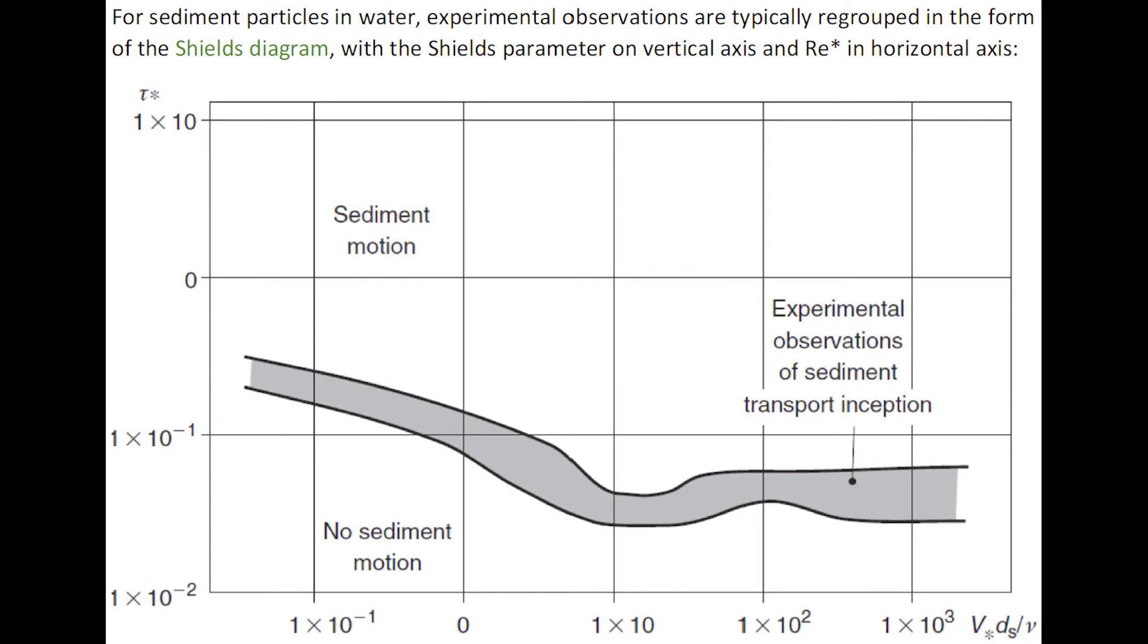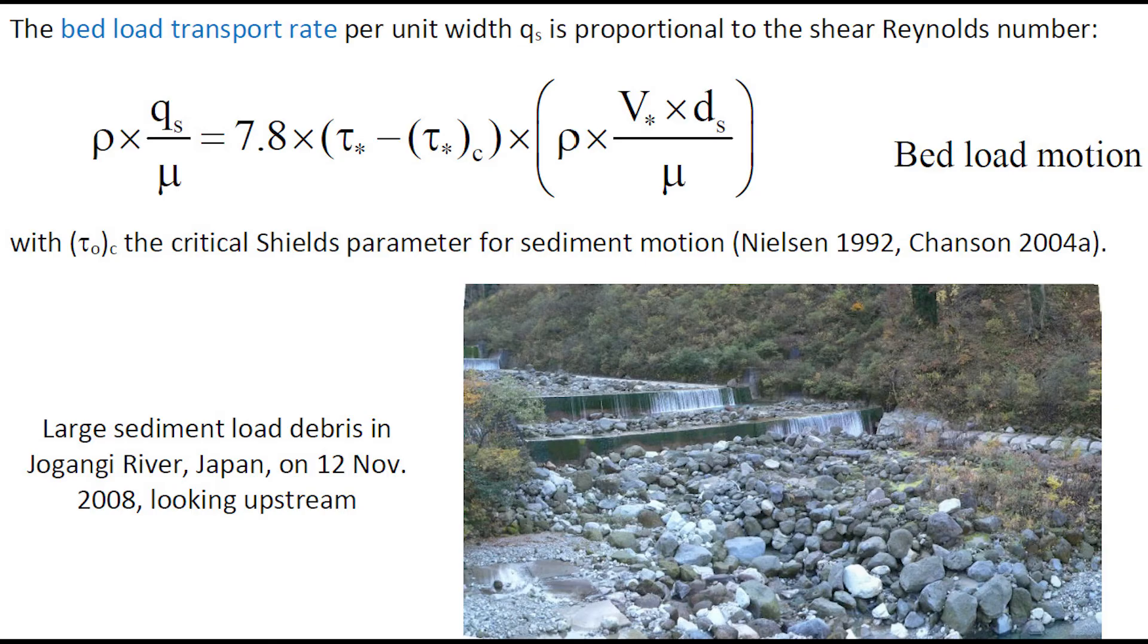For sediment particles in water, experimental observations are typically regrouped in the form of the Shields diagram, with the Shields parameter on the vertical axis and the shear Reynolds number on the horizontal axis.